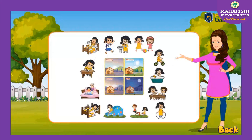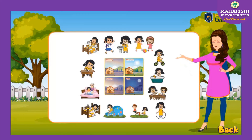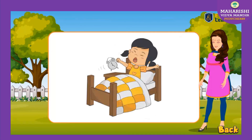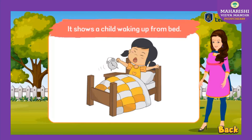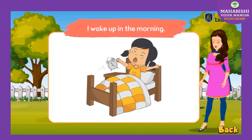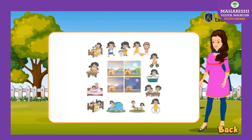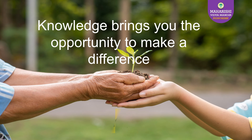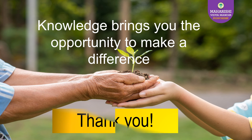Now, look at the pictures and make sentences using I, you, we or they. Look at the first picture. It shows a child waking up from bed. We can make a sentence like this: I wake up in the morning. Now look at the other pictures carefully and make sentences out of them.